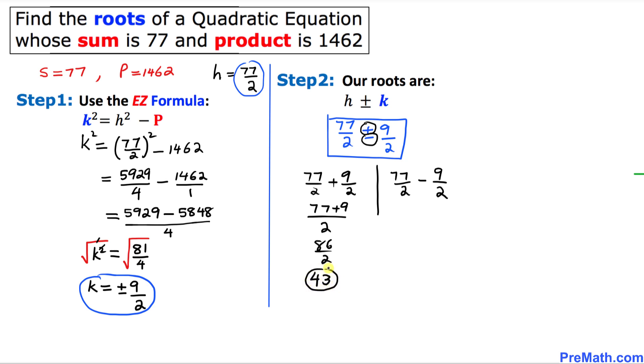And right up here we are going to do the same thing. Our common denominator is 2. 77 minus 9 is going to give us 68 divided by 2, is going to be 34 is another solution.